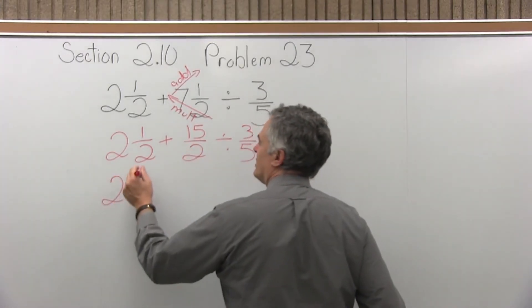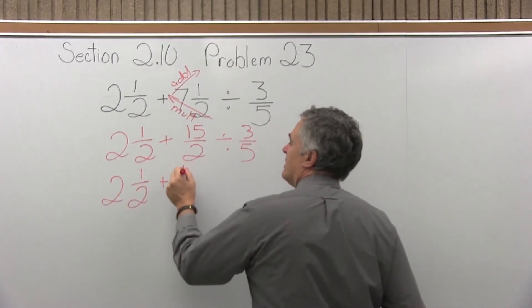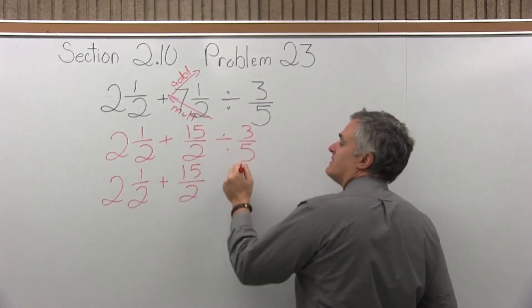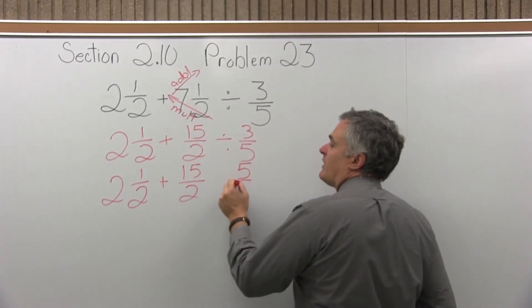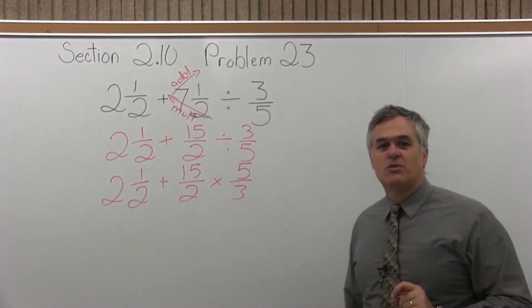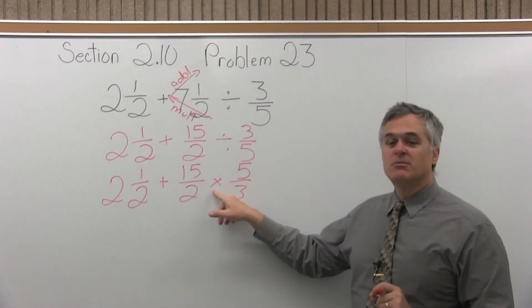Now to complete my division, I'll leave the two and a half in front of the problem for one more step. The fifteen halves can stay, but the three fifths gets inverted to five thirds and that division changes to a multiplication. So you invert the second fraction and it becomes a multiplication.